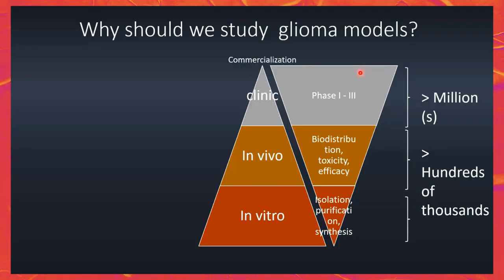Why do we need to study models of gliomas when MRI is translational and we can do everything on patients? Well, first of all, if you have to develop any new drugs, you can see the inverted arrow indicating the cost of doing a clinical study or going blindly. You need to do the studies in cells, in animals, and then in humans — that's the traditional pathway, that's how the regulators work.